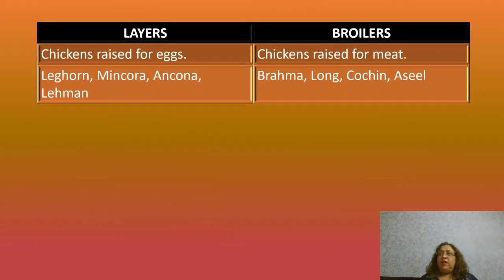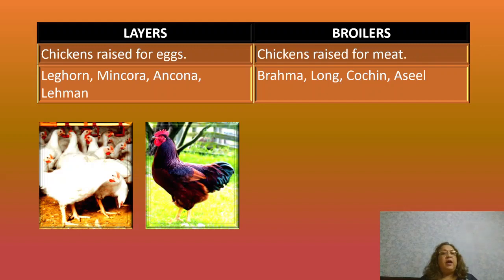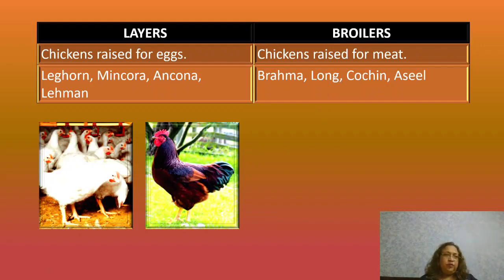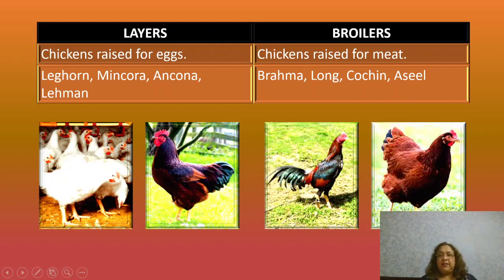Chickens are divided into two types: layers and broilers. Chickens raised for eggs are called layers — examples include Leghorn, Minorca, Ancona, and Laman. Chickens raised for meat purposes are called broilers — examples include Prama, Long, Cochin, and Aseel.